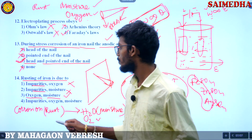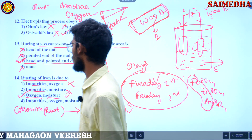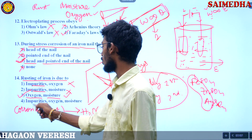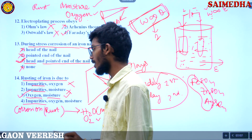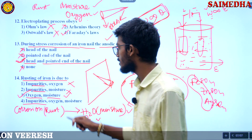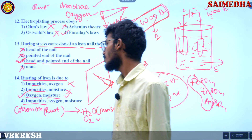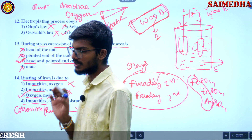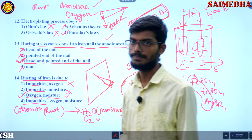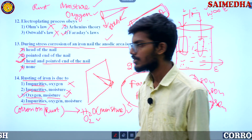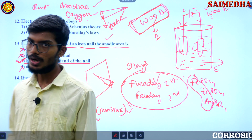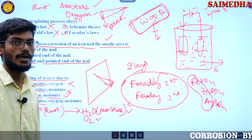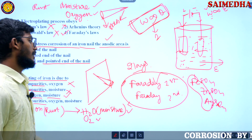Oxygen and moisture — both are necessary for rusting. Impurities and oxygen can also be considered, but priority is given to oxygen and moisture. Both are definitely necessary. Take note of this. I hope you are clear. We will go with the next questions.